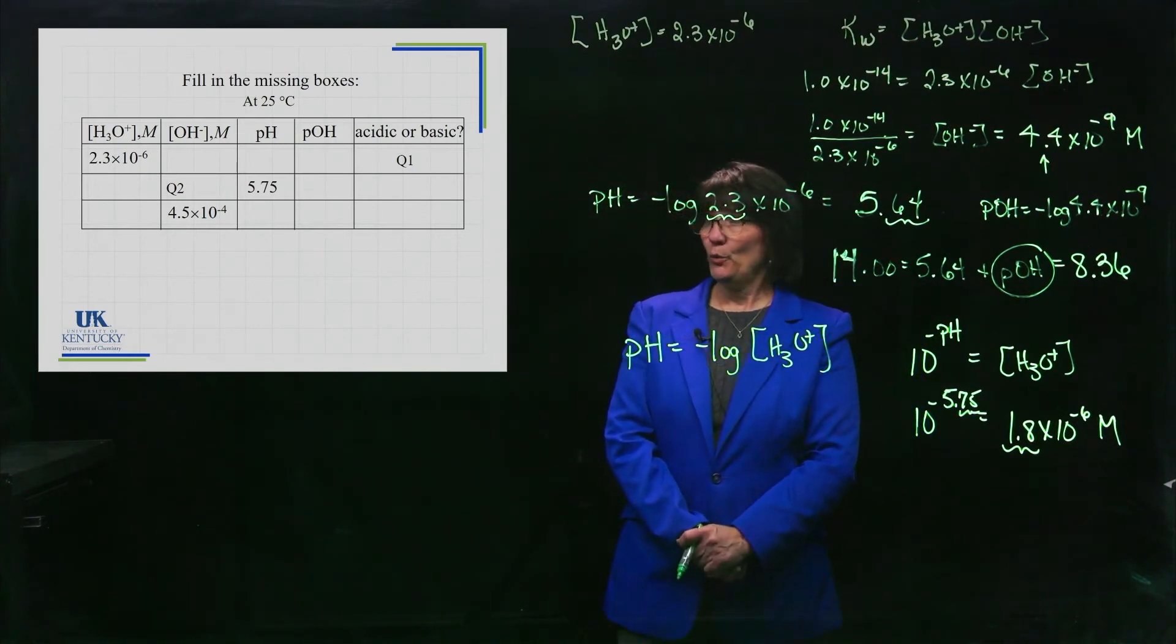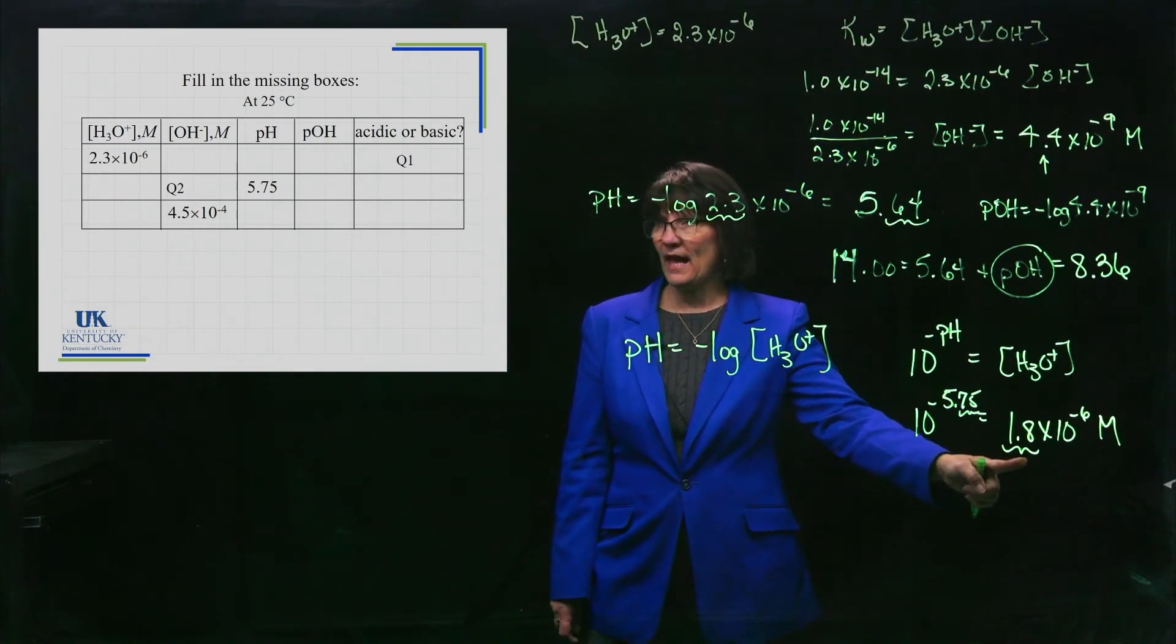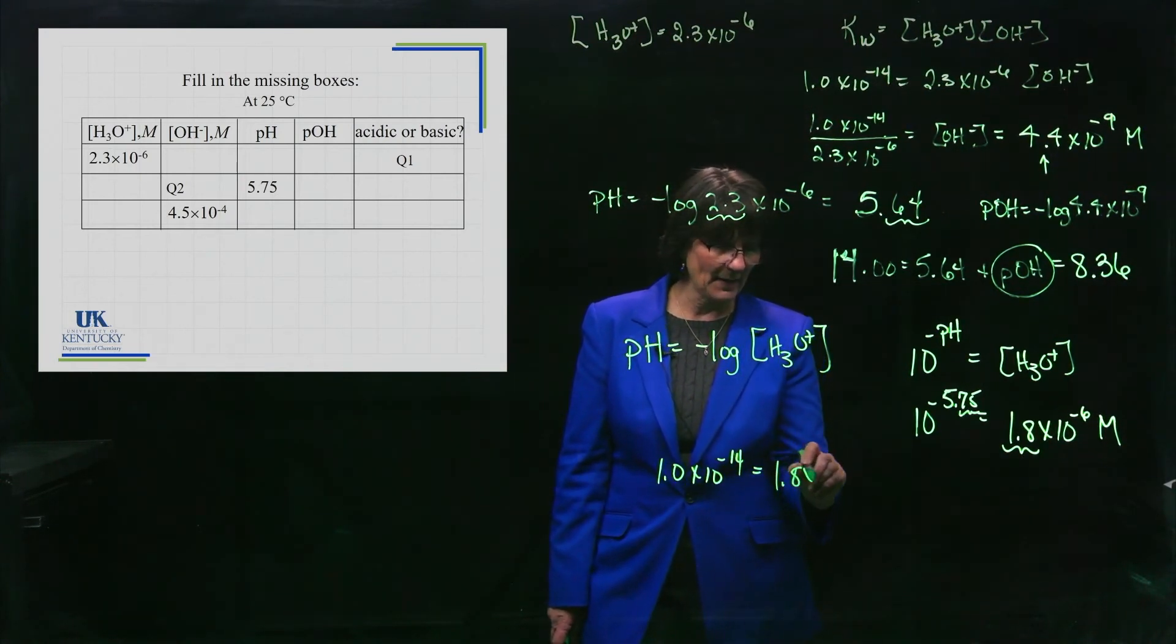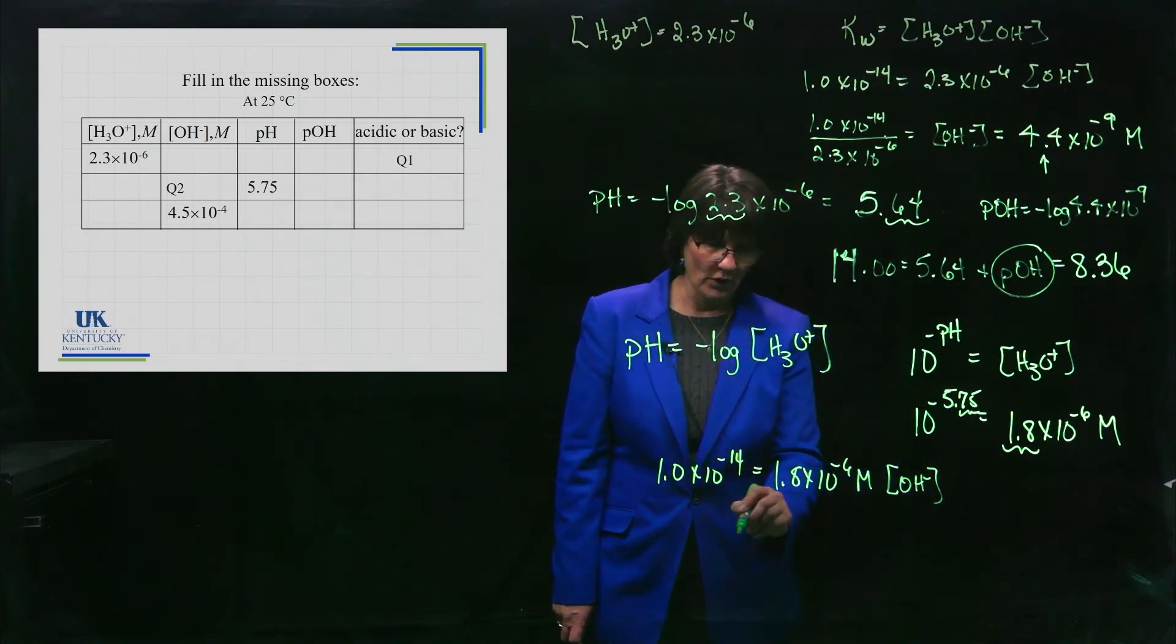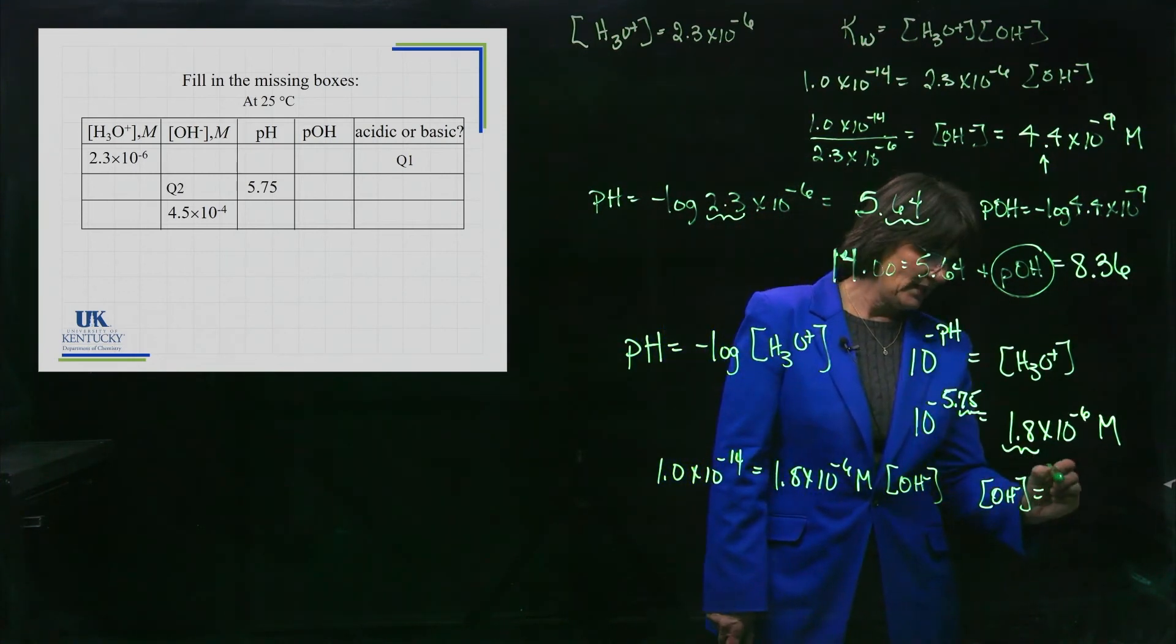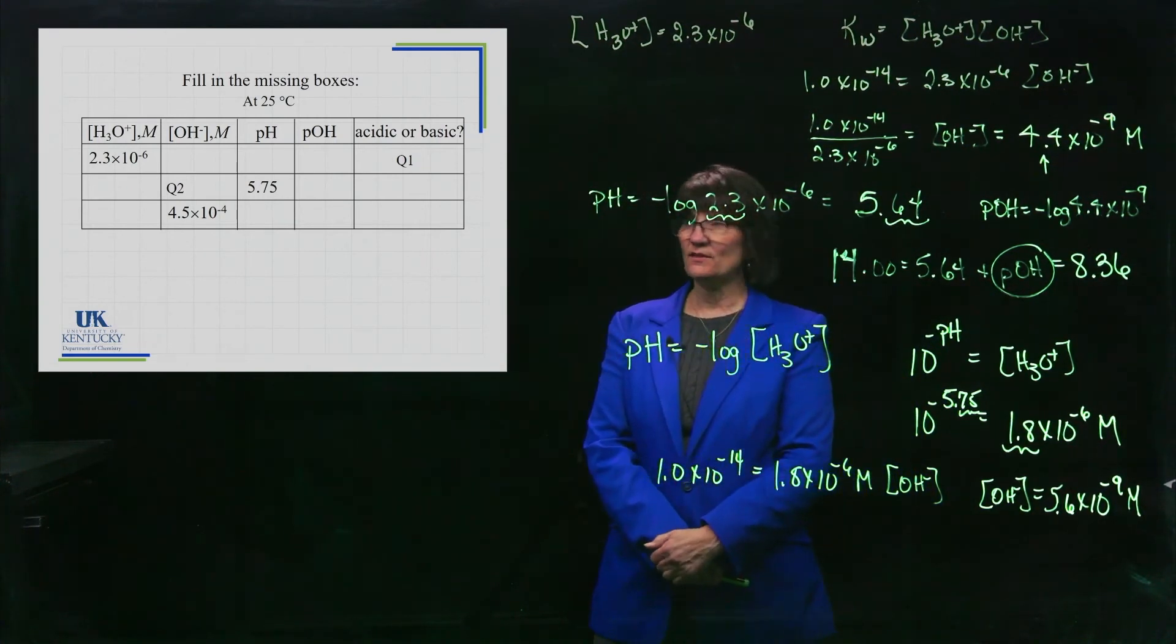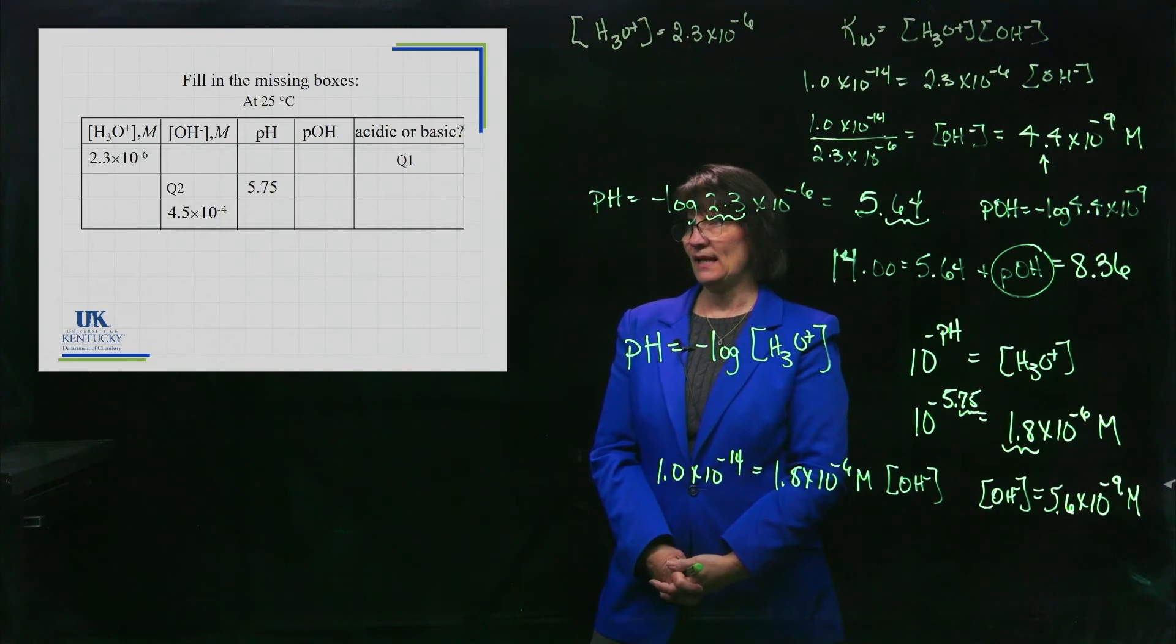Now, I want you to come up with the OH minus concentration. To get the OH minus concentration, I would probably choose this one because I know the H3O+ concentration. 1.0 times 10 to the minus 14, which is Kw, is the H3O+ concentration, which is 1.8 times 10 to the minus 6, times the OH minus concentration. When you solve for the OH minus concentration, you end up with 5.6 times 10 to the minus 9. This would also be an acidic solution. A pH of 5.75 is lower than 7. I know it is acidic.